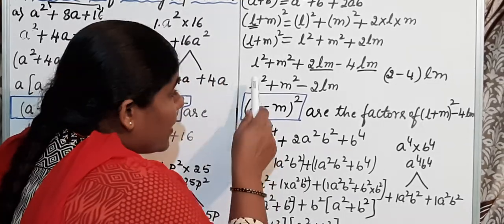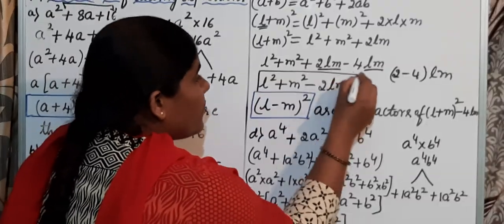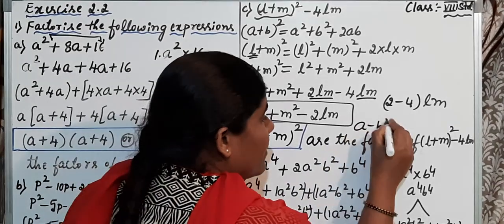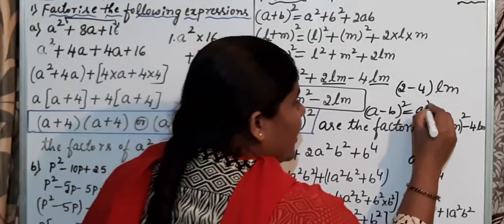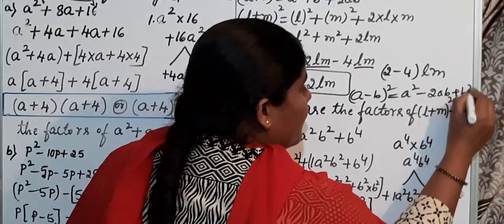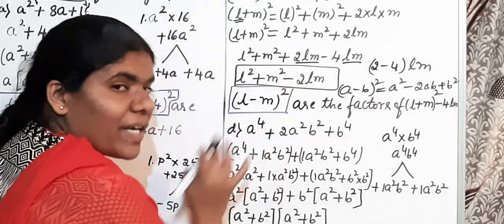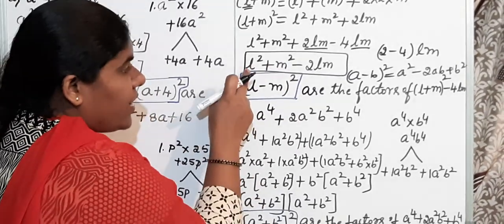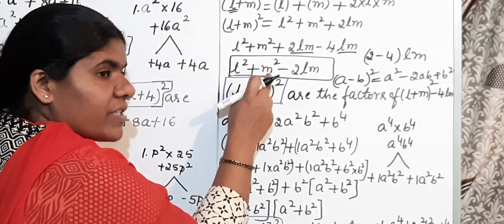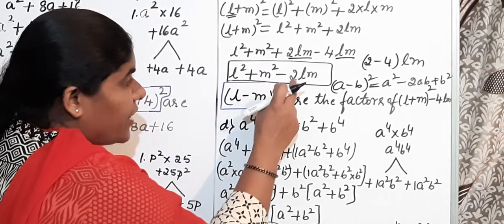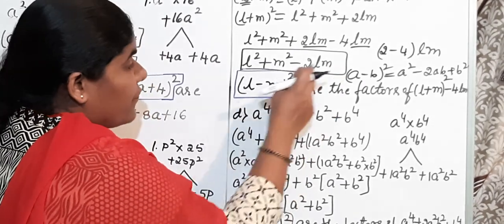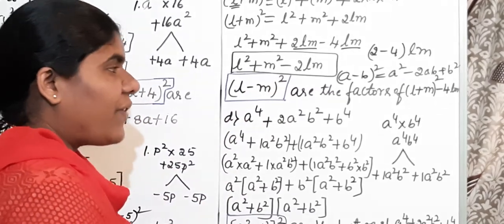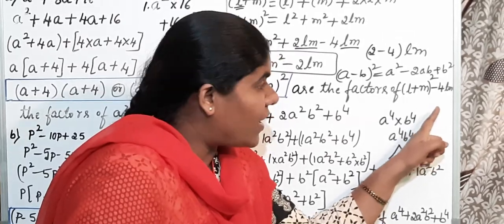This expression looks like the identity A minus B whole square = A² minus 2AB + B². Using this identity with A = L and B = M, we can write L² + M² minus 2LM as (L minus M)². Therefore (L minus M)² are the factors of (L + M)² minus 4LM.